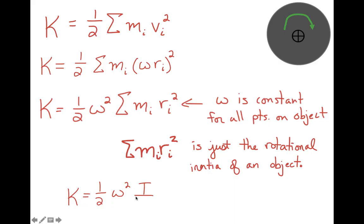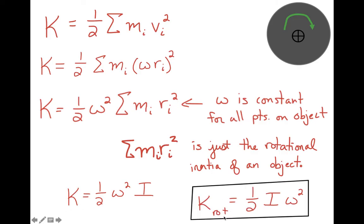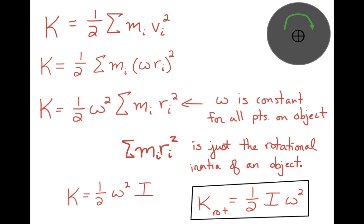So the rotational kinetic energy of an object is one half times I, the rotational inertia of the object, times omega squared, where omega is its angular speed. Be careful — there's a one half out front, and sometimes the formula for I of a solid disk also has a one half in it. That one half out front is not the coefficient for the shape of the object — those are separate. So I equals the shape coefficient times m times r squared. A lot of people forget the coefficient or confuse it with this one half.